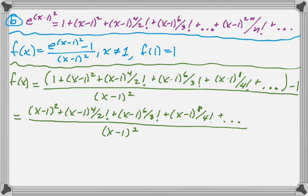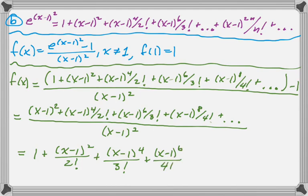Now, if you notice, everything has at least an x minus 1 to the second, which means we can cancel all of them. So the x minus 1 to the second cancels to leave us with 1. x minus 1 to the fourth divided by x minus 1 to the second leaves us x squared, x minus 1 squared, and so on.